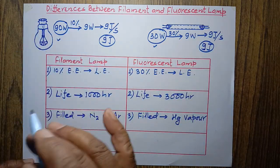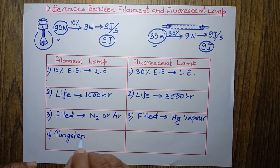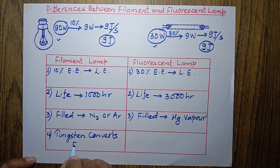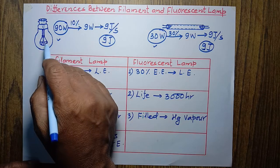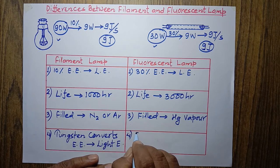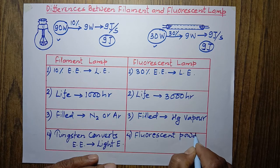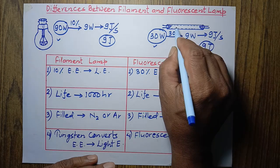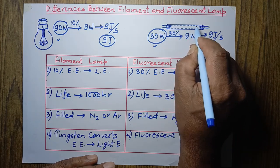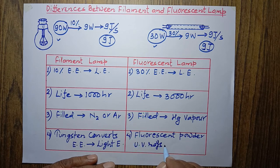The fourth difference: in the filament lamp, tungsten converts electrical energy into light energy — tungsten is the element of the filament lamp. But in the case of the fluorescent lamp, it is not electrical energy that is directly converted into light. The inner wall of the fluorescent lamp is coated with fluorescent powder, and this fluorescent powder converts ultraviolet rays into light energy.